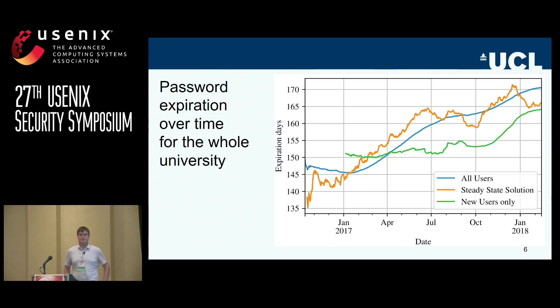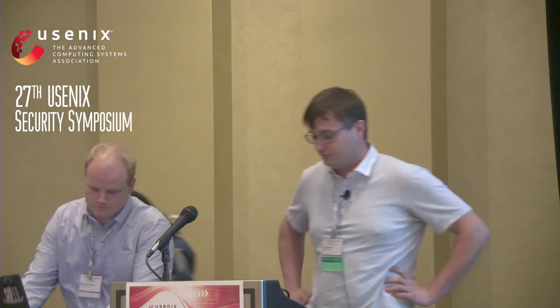Q: Did you consider including edit distance or some diff measure in addition to strength? Once users are encouraged to pick a high-entropy password, after the first trial they might just increment a number or swap a character each time, so you'd see no correlation after the first changeover. A: It would have been nice to have these metrics but it was not our system. If you've managed to do it with a university, we'd be happy to hear about it.